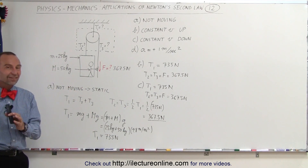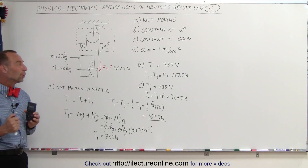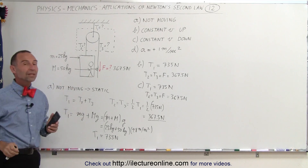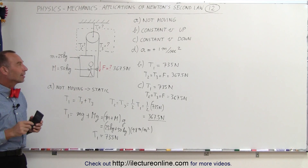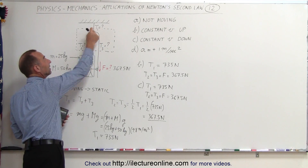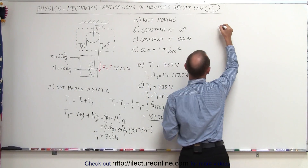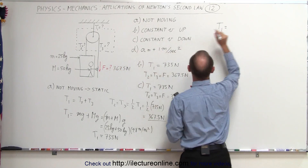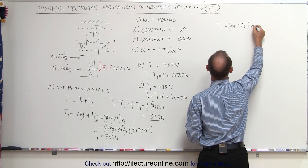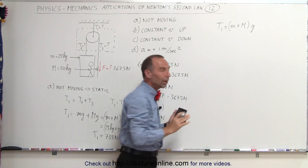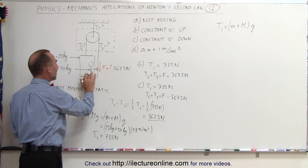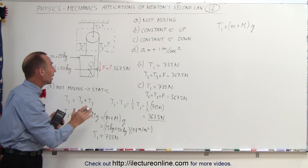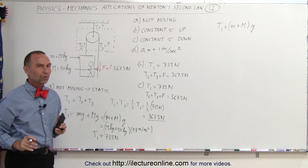For Part D, when there is an upward acceleration of 1 m/s², things are different — additional force is required. Tension 1 must support the total weight against gravity plus provide the extra force to accelerate both the person and box upward. So T1 = (m + M) × g + (m + M) × a = (m + M)(g + a).